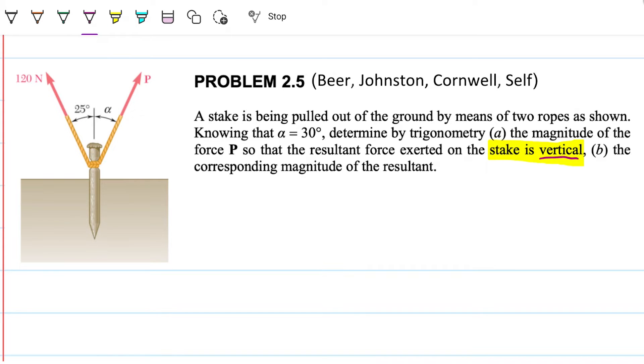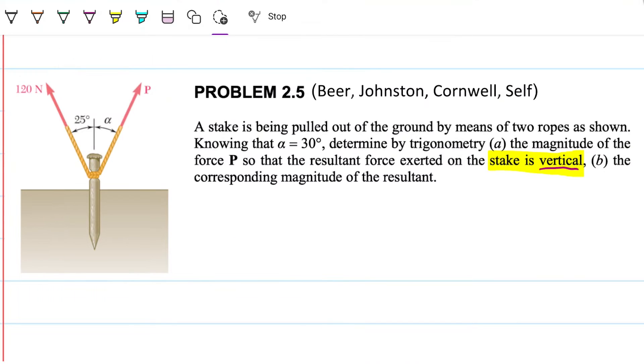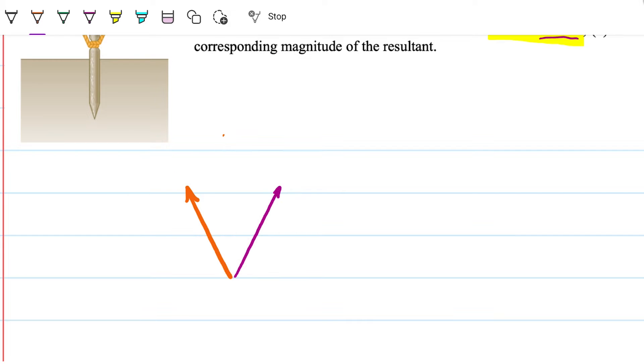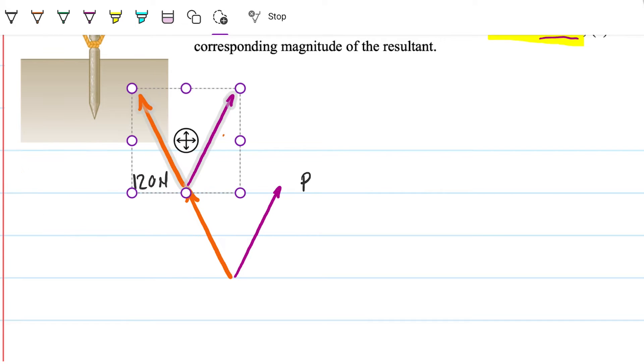And then the corresponding magnitude with the resultant, that is, if we then combine these two, what does that look like? So let me go ahead and place these two here. So we have P and we have 120. What's the resulting force? Well, the resulting force is the combination of those two.